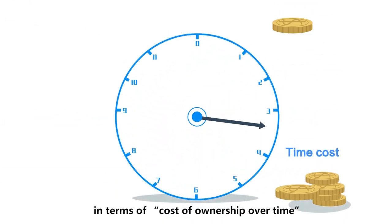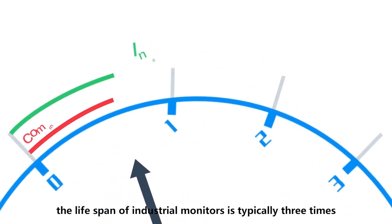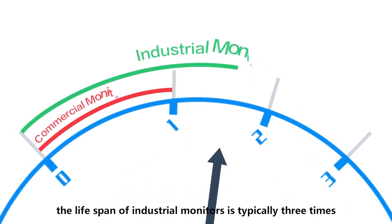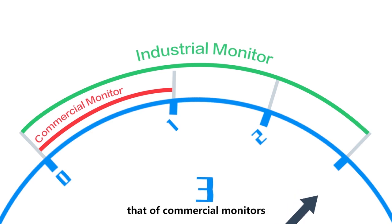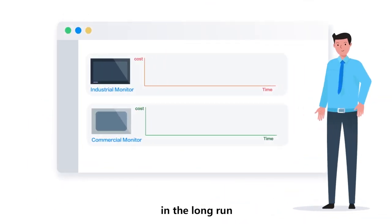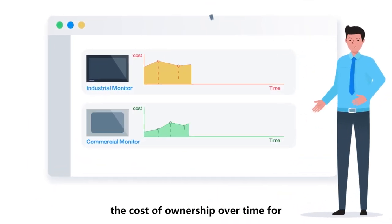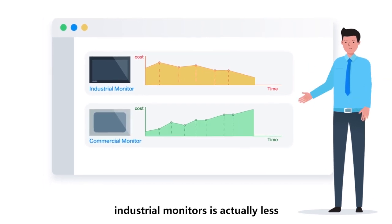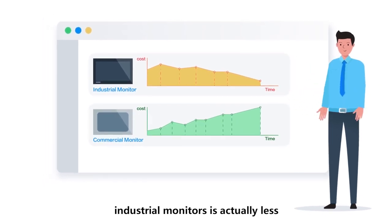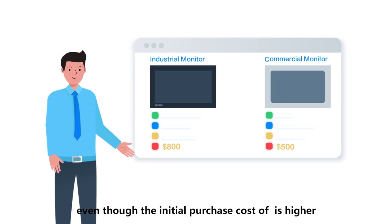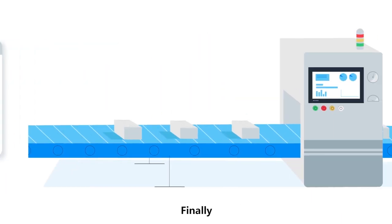Secondly, in terms of cost of ownership over time, the lifespan of industrial monitors is typically three times that of commercial monitors. Thus, in the long run, the cost of ownership over time for industrial monitors is actually less, even though the initial purchase cost is higher.